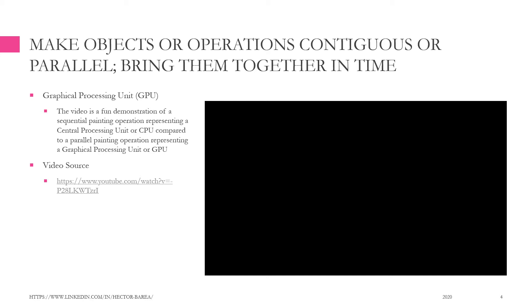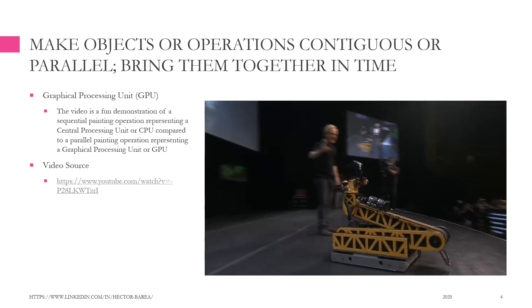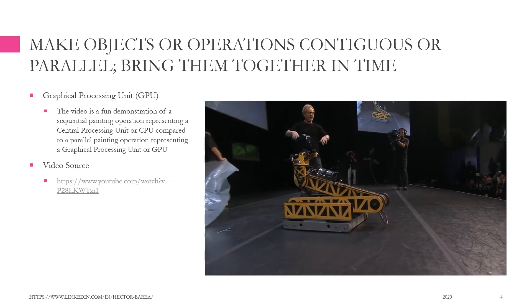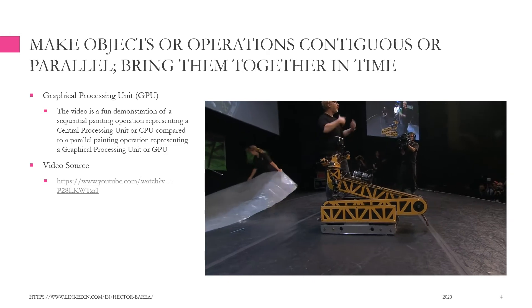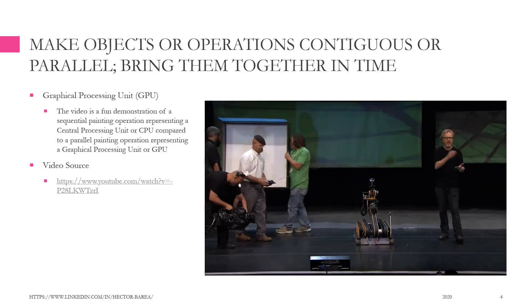The video is a fun demonstration of a sequential painting operation representing a central processing unit or CPU, compared to a parallel painting operation representing a graphical processing unit or GPU. I introduce to you Leonardo, and he is going to paint a picture in the way that a CPU might do it, as a series of discrete actions performed sequentially, one after the other.